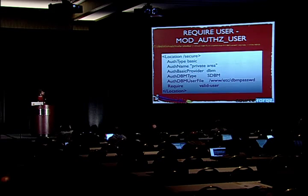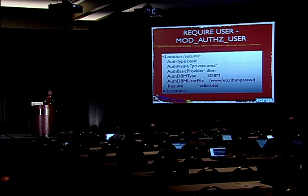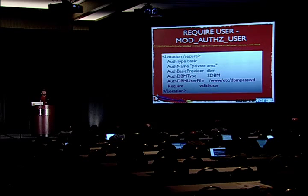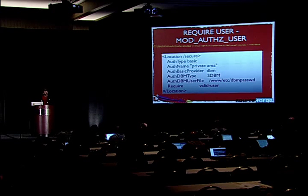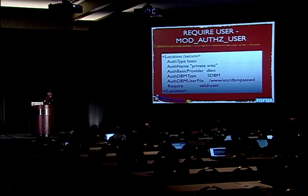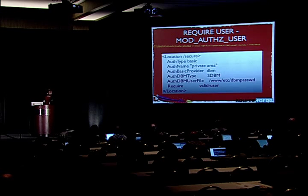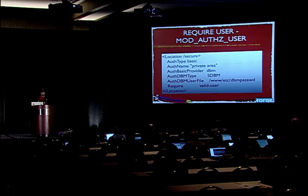There's another authentication protocol called digest, which does a better job — it hashes the username and password making it significantly more difficult to harvest. The auth_basic_provider keyword was added in 2.2 and reflects that you can now store authentication credentials in a number of different backends: file, DBM, DBD, or LDAP. In this particular case, I have to specify the DBM type and the file path to where I'm actually storing the password.